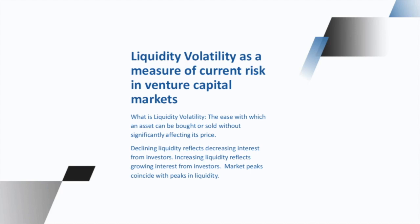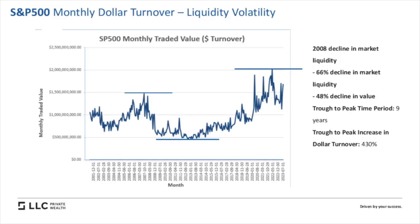Our view is that market peaks often coincide with peaks in liquidity. As a baseline example, this is a chart of the S&P 500 monthly dollar turnover. The far left is 2001, and that first peak is 2007. 2008 probably represents the largest financial calamity of our generation. The value of the S&P went down 48%, and liquidity decreased by about 66% in fairly short order.